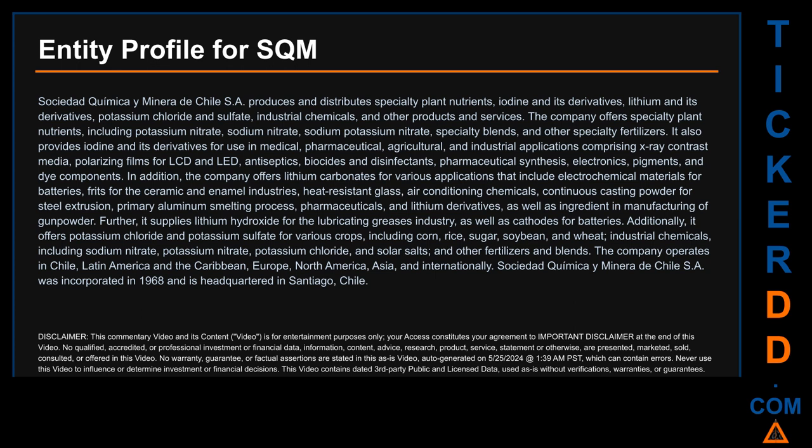SQM's lithium products serve the ceramic and enamel industries, heat-resistant glass, air conditioning chemicals, continuous casting powder for steel, primary aluminum smelting, pharmaceuticals, and lithium derivatives, as well as an ingredient in the manufacturing of gunpowder. The company also supplies lithium hydroxide for the lubricating greases industry and for cathodes for batteries. Additionally, it offers potassium chloride and potassium sulfate for various crops including corn, rice, sugar, soybean, and wheat, as well as industrial chemicals such as sodium potassium nitrate and solar salts.